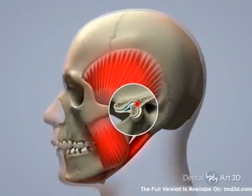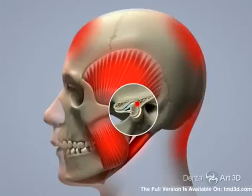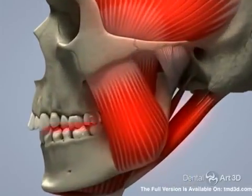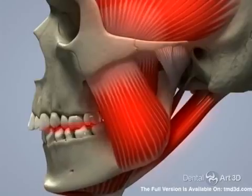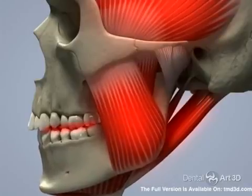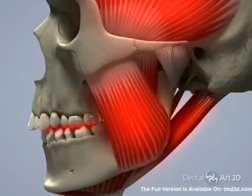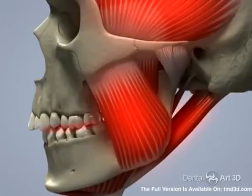In addition, the muscles could be in a state of hypertonus, or spasm, which can result in tension headaches. An incorrect position of the lower jaw can result in parafunctional activity of the muscles, such as clenching and grinding.